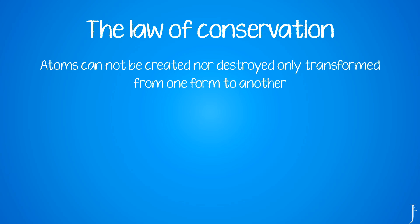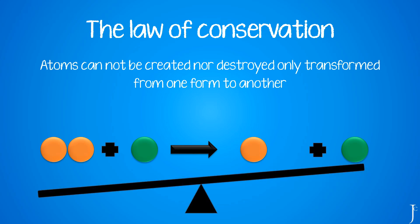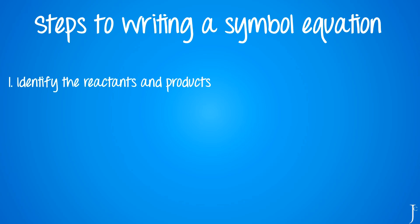In chemistry there is a very important law called the law of conservation. This states that atoms cannot be created or destroyed — only transformed from one form to another. This means we must always have the same number of atoms on the reactant side as on the product side. If we don't, the equation is unbalanced. For example, if we have two orange atoms on the left but only one on the right, we need to add another atom to balance the equation.